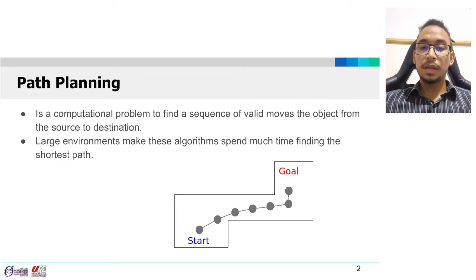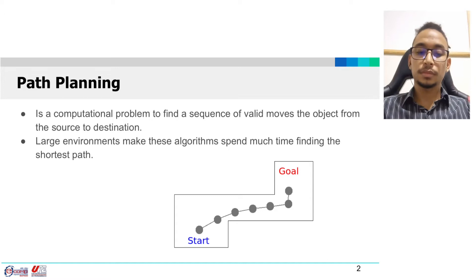First, the path planning definition. It's a computational problem to find a sequence of valid moves an object can make from the source to destination. A common problem is that large environments make the path planning algorithms spend much time to find the shortest path.